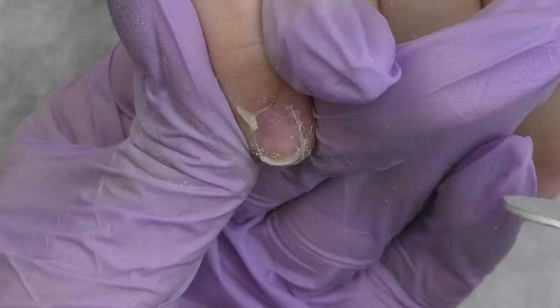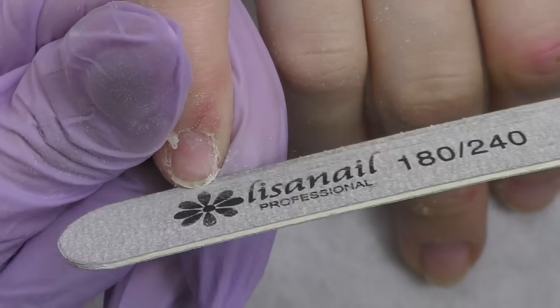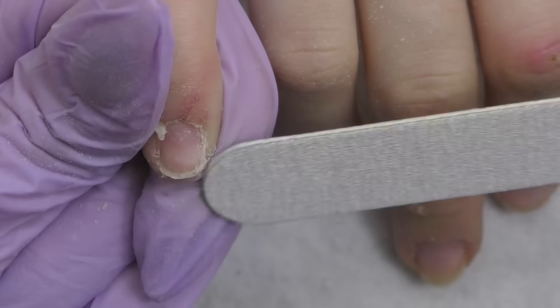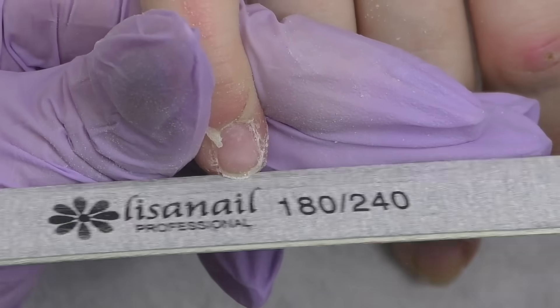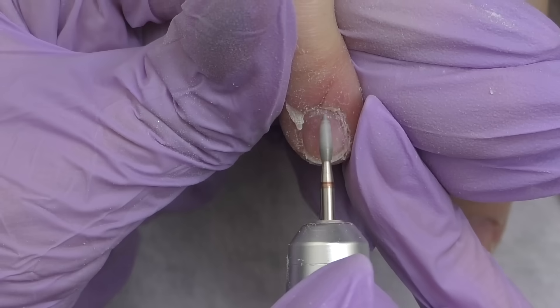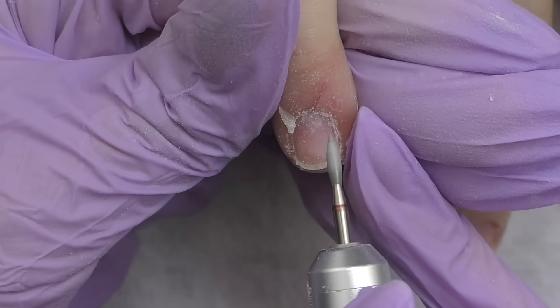Now, we need to file the free edge shorter. Wait, what? Anna's nails are so long that we need to file them shorter? Yes, we do. And we're going to do new extensions and I'm going to use forms. That's why it's important to have a nice shape of the free edge.